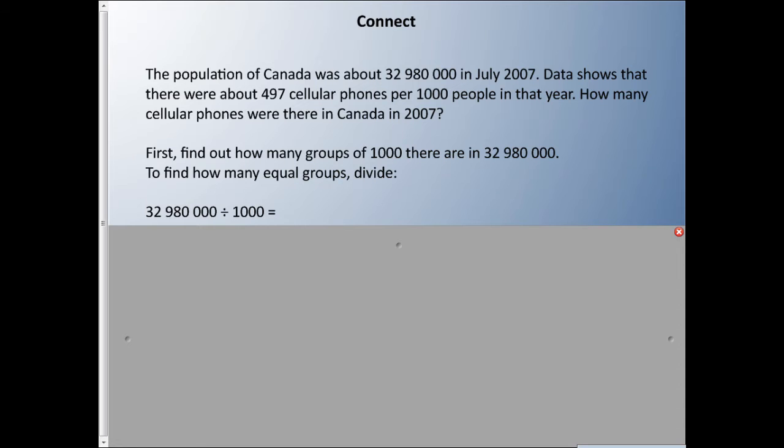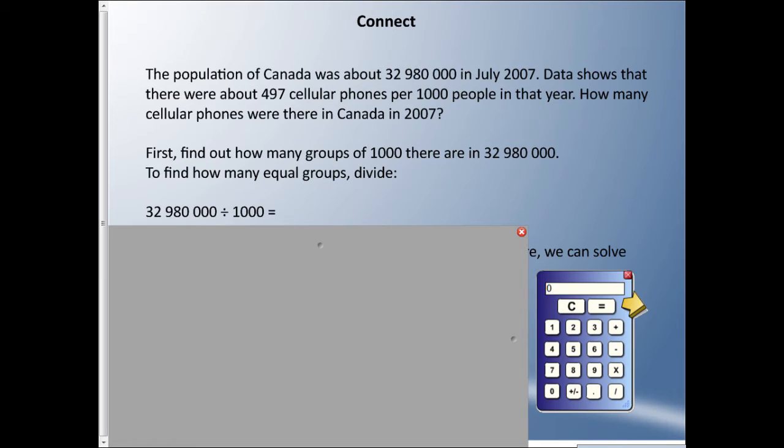We need to figure out how many groups of a thousand there are in 32,980,000. I'm going to use the calculator here. I'll type in 32,980,000, and the slash here is my division button, divide by 1,000, and I get 32,980. This number means how many groups of a thousand there are—we have 32,980 groups of a thousand.